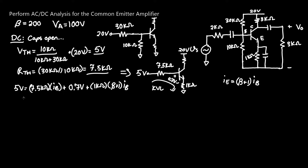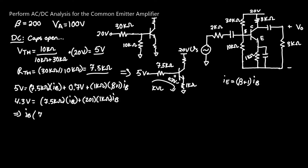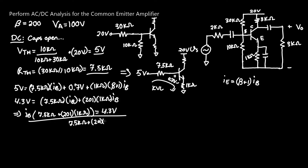Subtracting 0.7 V from both sides gives 4.3 V = 7.5 kΩ × I_B + 201 × 1 kΩ × I_B, since β = 200. Factoring out I_B, we get I_B × (7.5 kΩ + 201 × 1 kΩ) = 4.3 V. Solving, the base current I_B equals 20.624 µA, which is a very small current as expected when multiplied by β = 200 to get a larger output current.